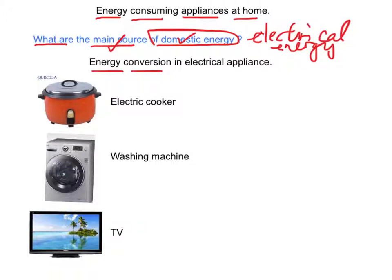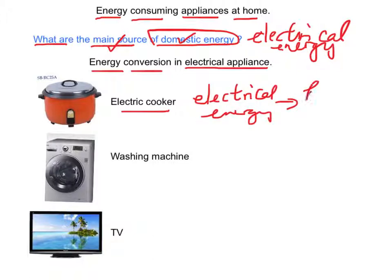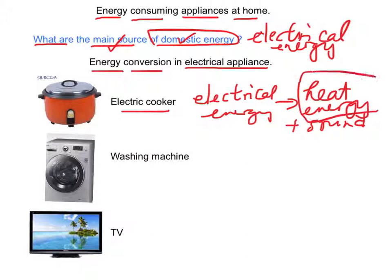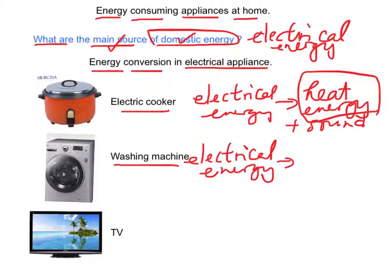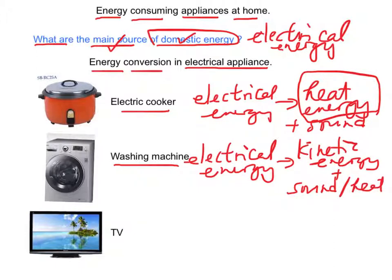Energy conversion in electrical appliances. Let's see the electric cooker — it converts electrical energy into heat energy and sound energy, and the main useful output energy is heat energy. For a washing machine, it turns electrical energy into kinetic energy and sound plus heat energy. The useful output energy of a washing machine is kinetic energy.